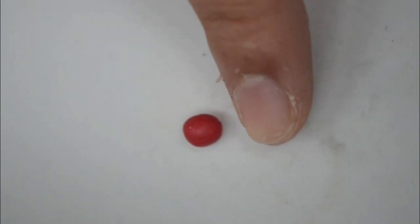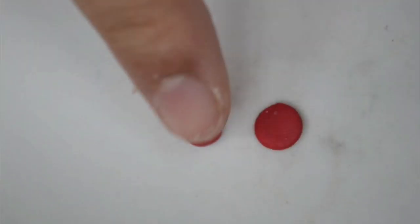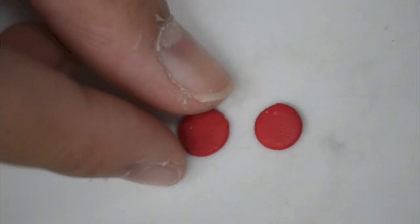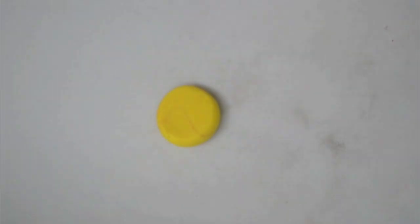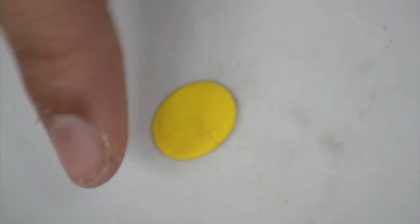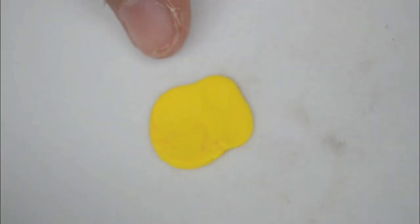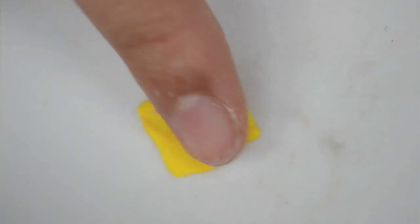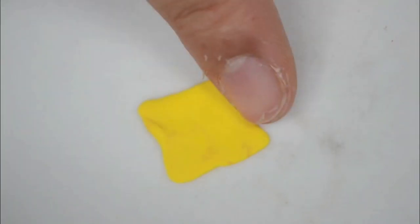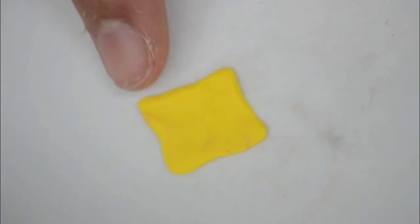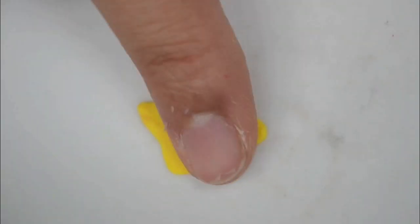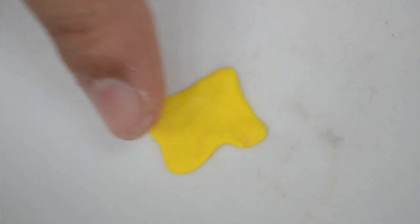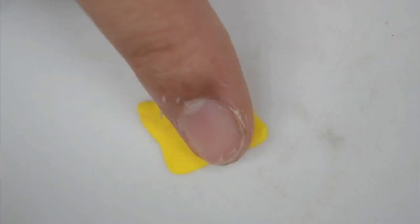For tomatoes, just take some red balls and press them down flat. It's pretty simple because we're not going to see them. For cheese, take some yellow and use your fingers to make it look melted, sort of making it into a rectangle shape. Nothing has to be precise here because it's all going to be melted and sandwiched.